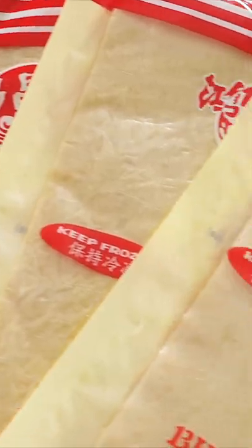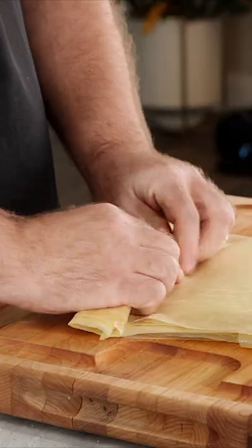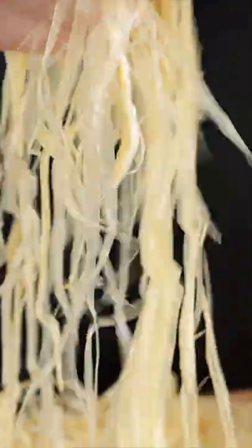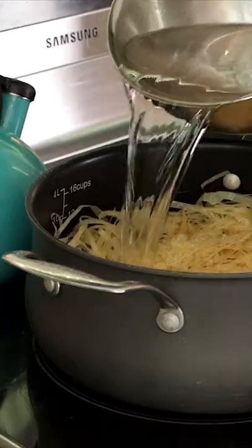Let's make a steak, but we're gonna make it out of soy skin. First, we wanna shred the soy skin. We're gonna shred it pretty fine. These are gonna be the muscle fibers of your steak.